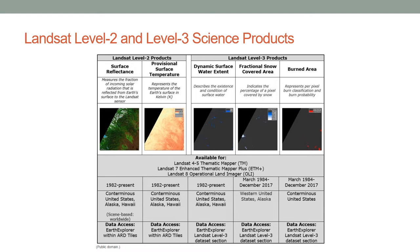Landsat Level 1 provides radiometric and geometric calibration resulting in an auto-rectified image. The Landsat Level 2 products add value by generating surface reflectance and temperature. Level 1 was the top of atmosphere reflectance that was radiometrically calibrated and geometrically corrected to give an auto-rectified image. Now, atmospheric corrections have been done on the top of atmosphere reflectance to recover the surface reflectance, which is the preferred product for land cover mapping. Surface temperature rasters can also be generated as Level 2 products.